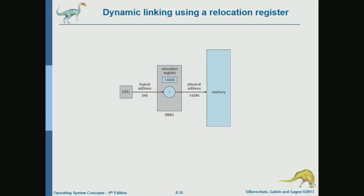The MMU adds the value of the relocation register. This relocation register holds the base address for the current process, and its value is set by the operating system. Clearly, the instruction that sets this value must be a privileged instruction — only the kernel has the privilege to change this value so that it can control the base or start address for each program and move programs around in memory to utilize memory as efficiently as possible.